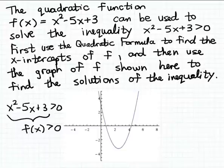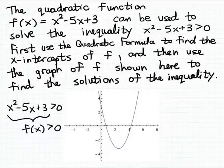And then by the same token, to the right of the second x-intercept, the graph of the function f is also above the x-axis. So that tells us that for any x value greater than the second x-intercept, the matching output value from the function f will also be a positive number — in other words, a solution to the inequality. So the solution set will be x values less than the first x-intercept combined with x values greater than the second x-intercept.